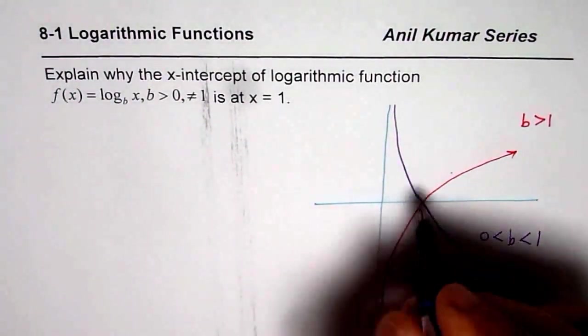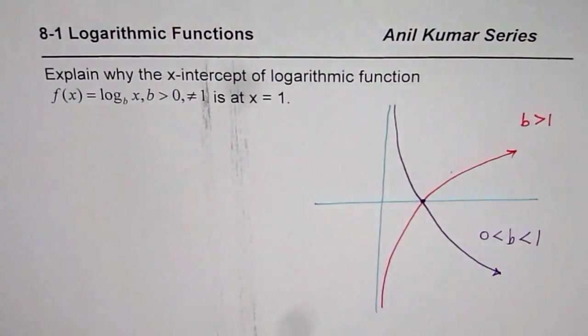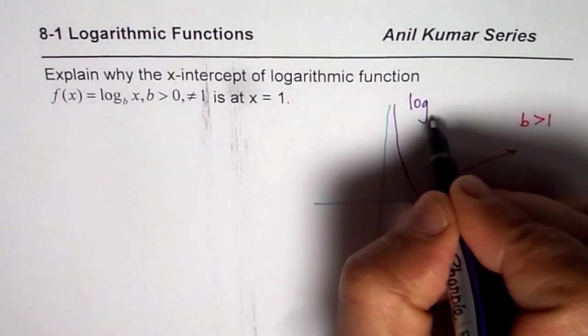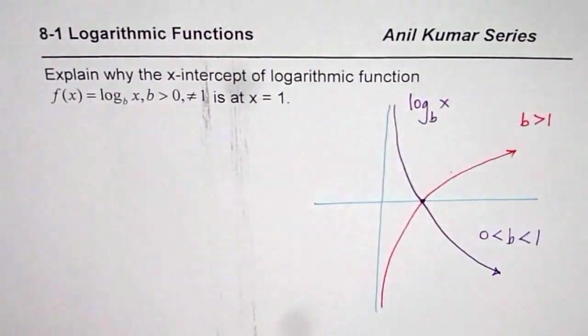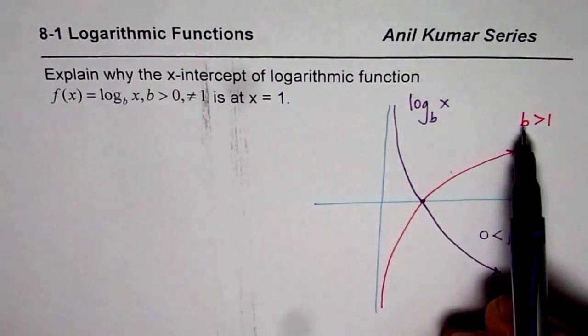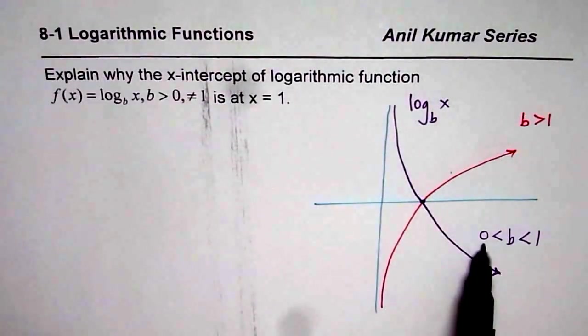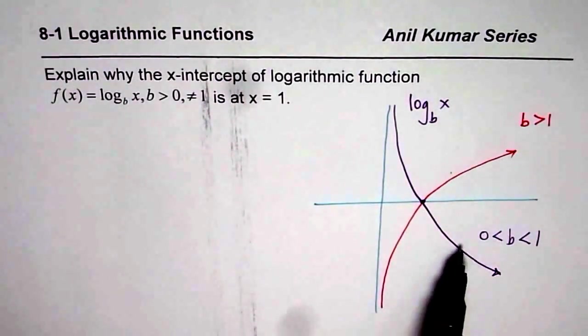So these are the two types of graphs you will see whenever you graph a function which is log base b of x. So b could be either greater than 1 or between 0 and 1. It can never be 1 or negative.